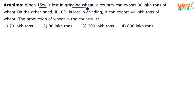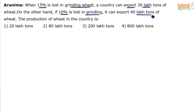If 15% is lost in grinding wheat, a country can export 30 lakh tons of wheat. On the other hand, if only 10% is lost in grinding, then it can export 40 lakh tons. What is the total production of wheat in the country? That is the question.